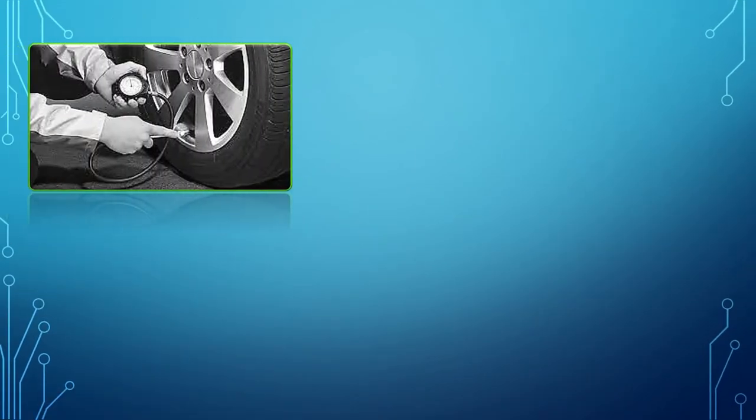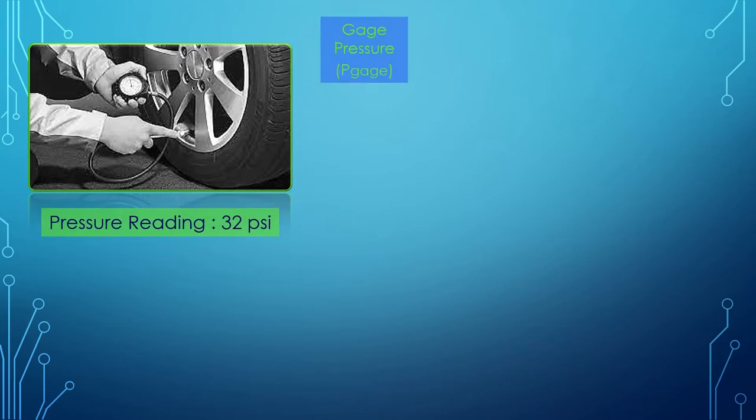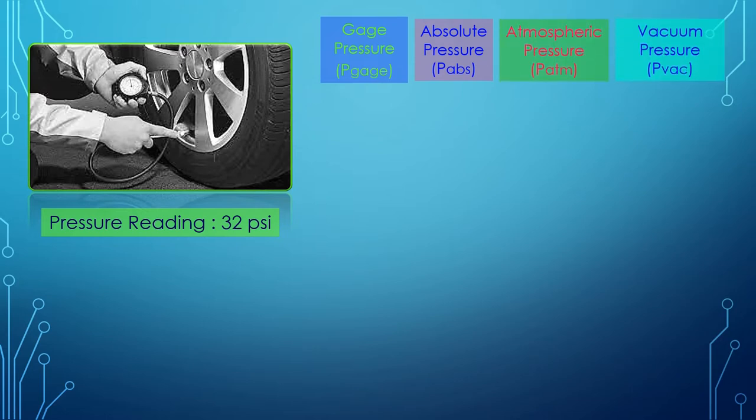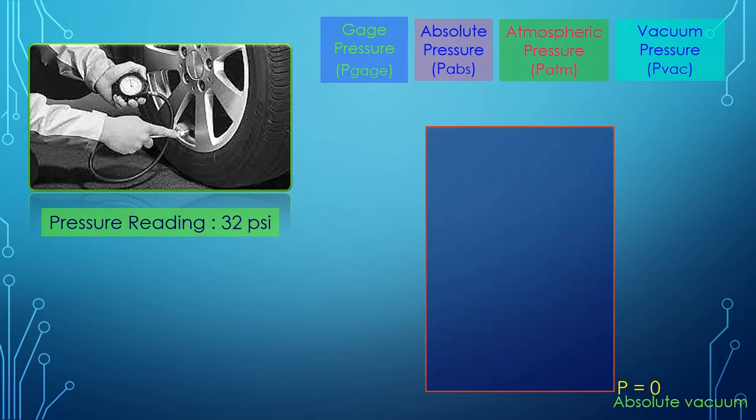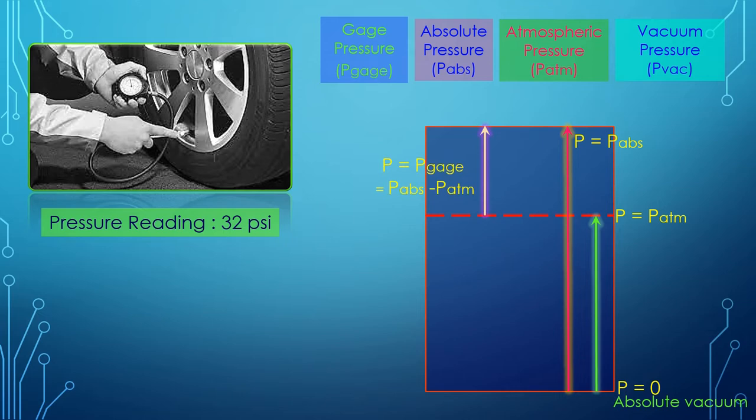Which pressure is this? Gauge pressure, absolute pressure, atmospheric pressure, or vacuum pressure? Let's understand these terms. At absolute vacuum the pressure is zero. The pressure of the atmosphere above absolute vacuum is known as atmospheric pressure. The pressure from absolute vacuum to a pressure above atmospheric pressure is known as absolute pressure. If we subtract atmospheric pressure from absolute pressure we get the gauge pressure. If the absolute pressure is below atmospheric pressure, then the pressure value just below the atmospheric pressure is known as vacuum pressure.